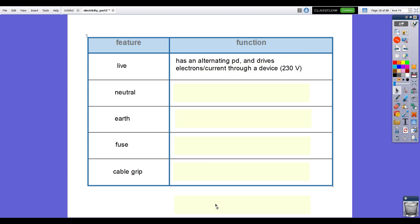Let's just run through the names you need to get down in your book. Live wire: it's got an alternating potential difference and drives the electrons or current through a device at 230 volts. Neutral: this provides a pathway to flow for the current to complete a circuit. It's at zero volts ideally, though you still wouldn't want to touch it. The earth: an additional safety wire. Zero volts again.